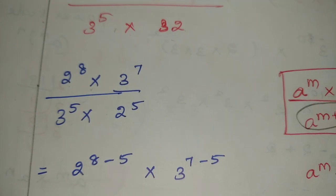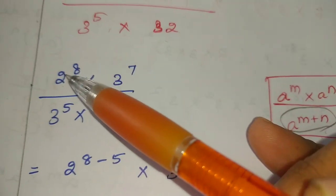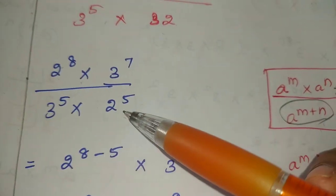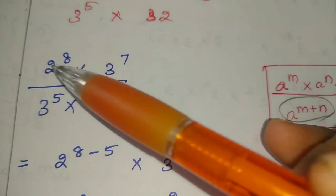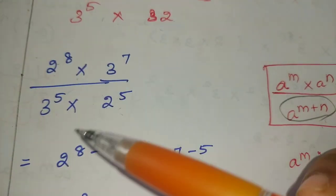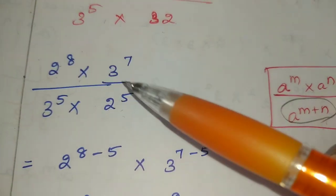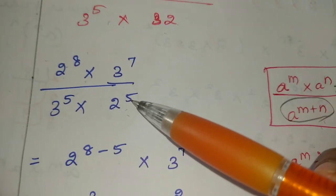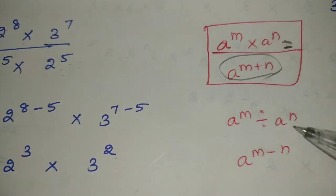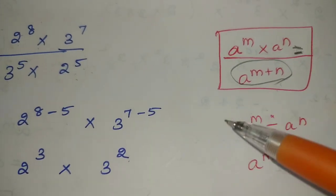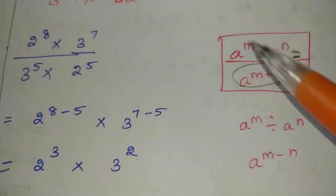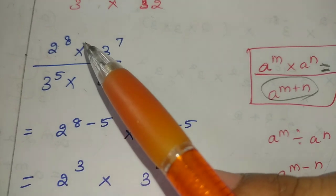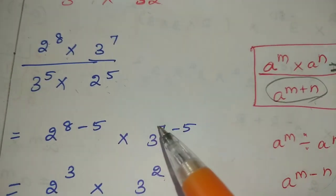Now look: base is the same. For 2 power 8 and 2 power 5, since the base is equal, 2 to the power 8 divided by 2 to the power 5 gives 2 to the power 8 minus 5. Why we use the quotient rule in the division, which means subtraction.